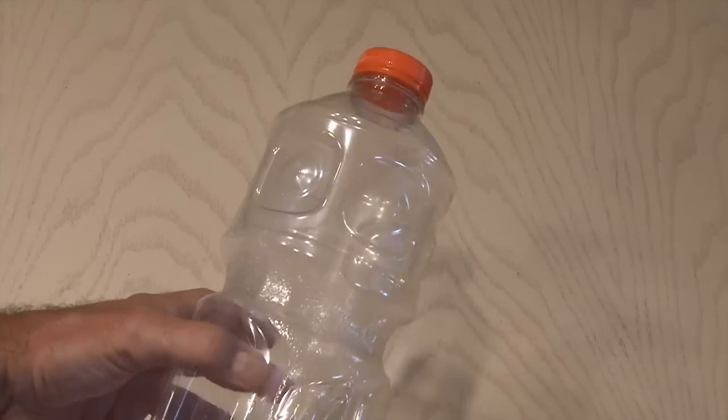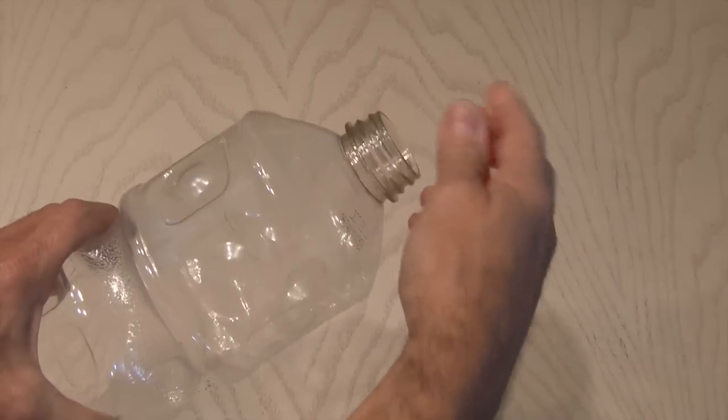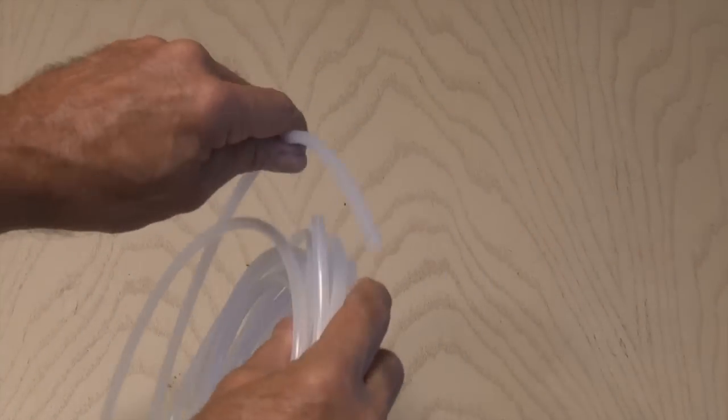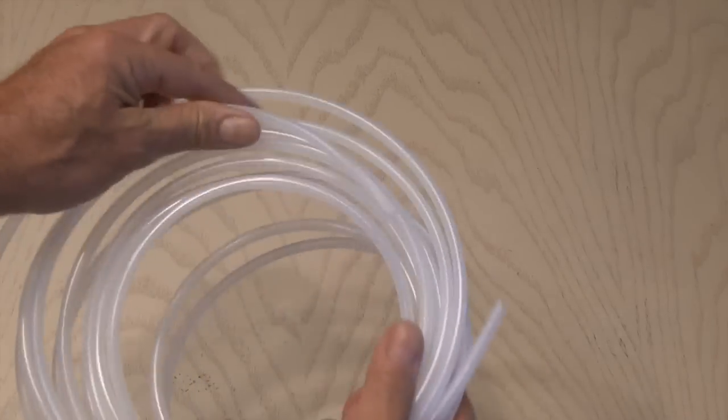Our water tank will be a regular old plastic two liter bottle or larger. Your feed line will be quarter inch high pressure plastic tubing. This stuff is pretty inexpensive, like two bucks for this giant piece. Then I drilled a small hole in the cap of the two liter bottle.